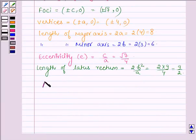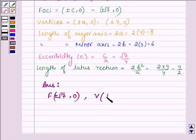is foci of the given equation is root over 7 plus minus comma 0. Vertices are given by plus minus 4 comma 0. The length of major axis is equal to 8 and the length of minor axis